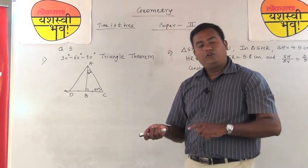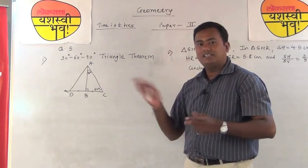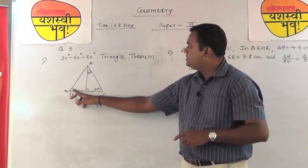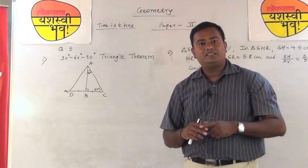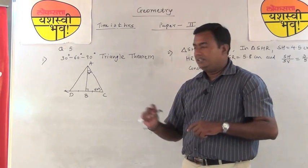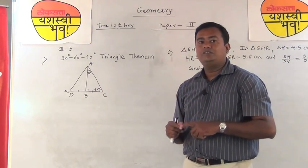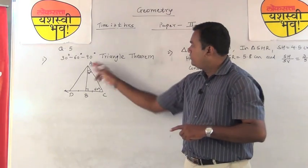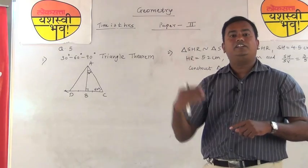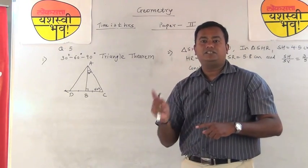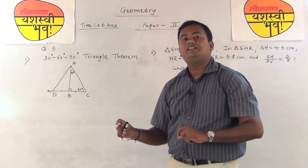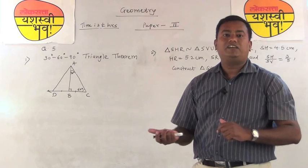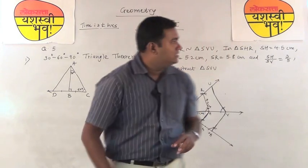For this theorem, use the textbook method only — do not change the method. If it were a sum rather than a theorem, you could prove the two triangles congruent by SAS and conclude angle C equals angle D equals 60°. But since it is a theorem, follow the textbook approach. Write: given, to prove, construction, then the proof stepwise. The first part proves the side opposite 30° is half the hypotenuse; using that, prove the second part. The theorem can be a 3, 4, or 5 mark question.